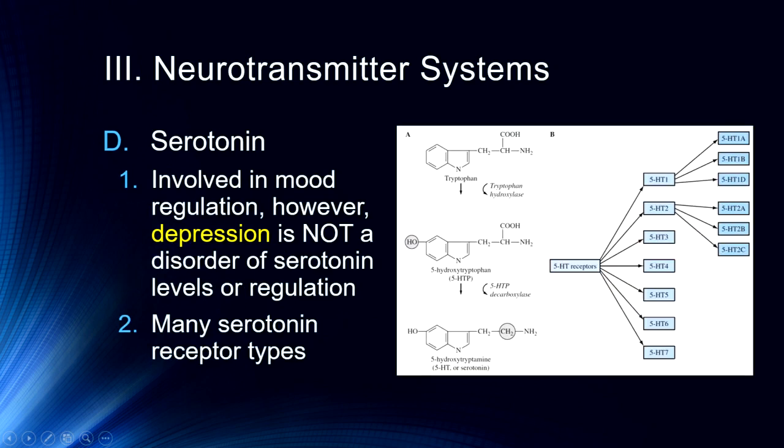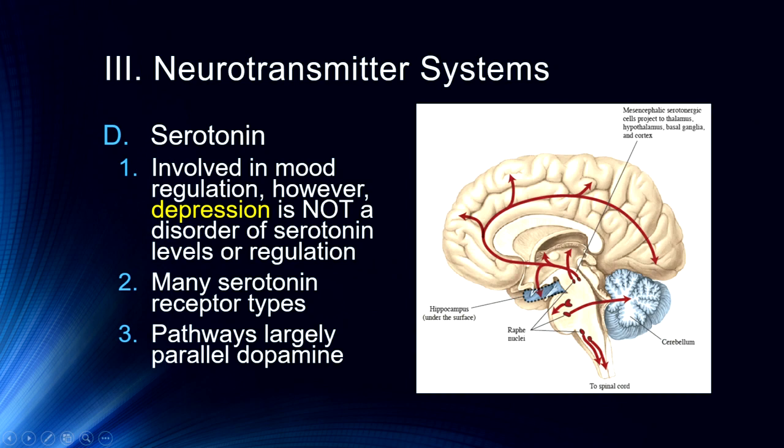As mentioned in a previous lecture, there are numerous serotonin receptor subtypes. We call these the 5-HT receptors because we go from tryptophan to 5-hydroxytryptophan to serotonin. There are roughly seven classes, and 5-HT1 and 5-HT2 have sub-receptor types, giving us over 10 different types of 5-HT receptors. The pathways for serotonin are largely parallel to those of dopamine — very different effects, but similar pathways involving motor pathways, memory, and association cortex.